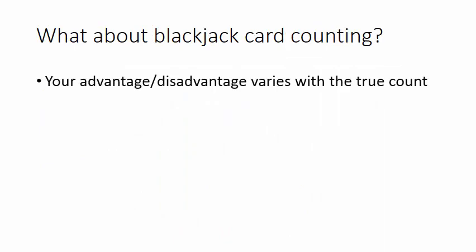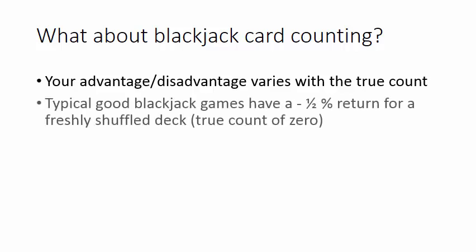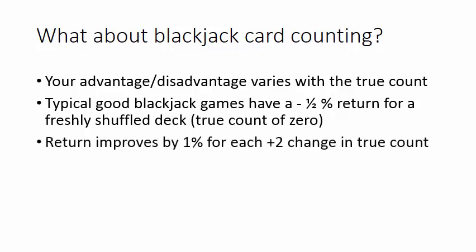Your advantage or disadvantage varies with the true count. Sometimes you'll play at a disadvantage, sometimes with a small advantage, a large advantage, or neutral. Typical good blackjack games have a negative one half percent return for a freshly shuffled deck — in other words, a true count of zero. And the return improves by one percent for each plus two change in the true count.